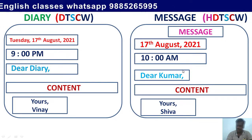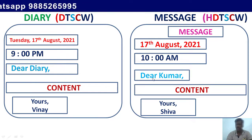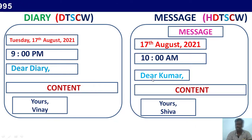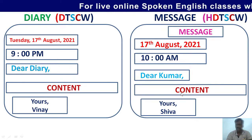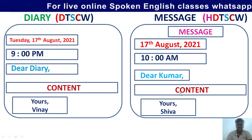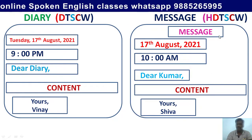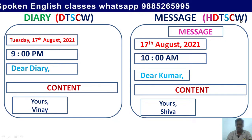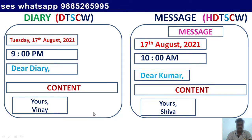The salutation depends on the recipient. Read the question carefully to understand who the recipient is. Here the recipient is Kumar, so we write 'Dear Kumar' — 'Dear' with a capital D and 'Kumar' with a capital K. In the content, write the matter according to the question and don't write unwanted matter. Finally, W stands for the writer's name.